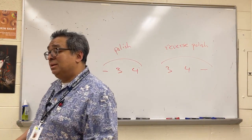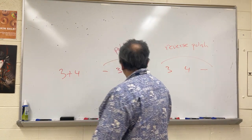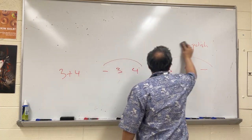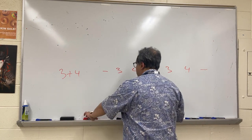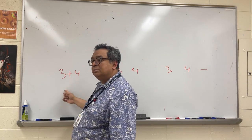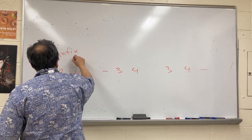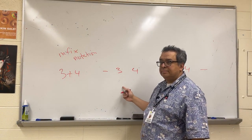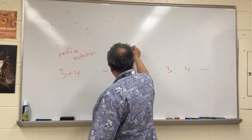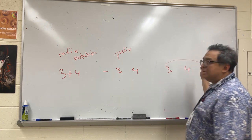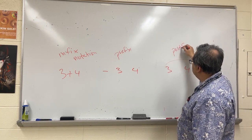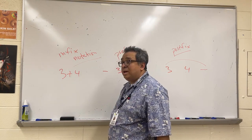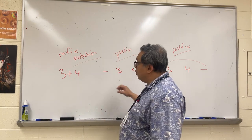It turns out that the terms Polish notation and reverse Polish notation are now considered to be slightly racist, so we don't use those terms anymore. Instead, we use new terms. The traditional way of writing expressions is called infix notation. Writing the operator first is called prefix notation. Writing the operands first and operator last is called postfix notation. In computer science, we are often asked to translate from infix to one of these — to go from human-readable form to computer-readable form.